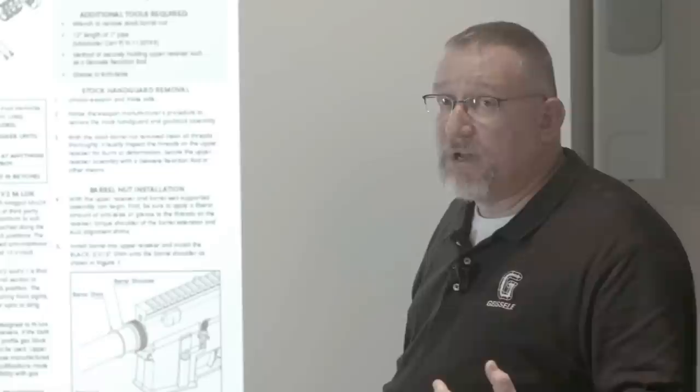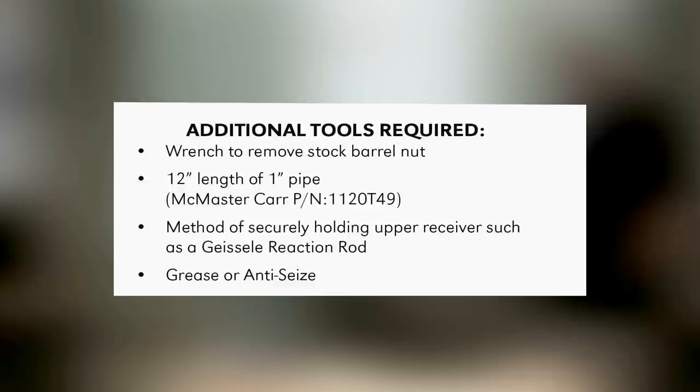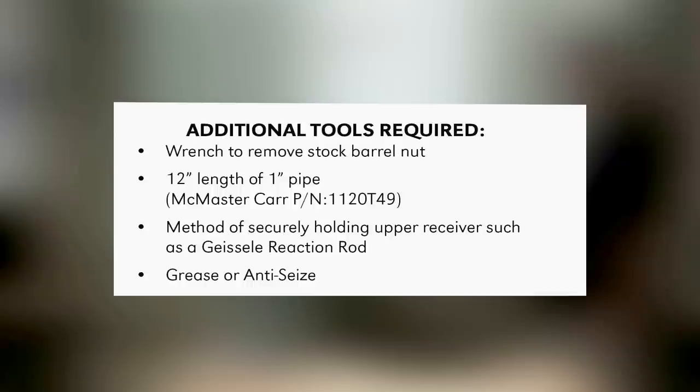Tools that you're going to need. You're going to need a way, if you're starting with an upper that's assembled, you're going to need a tool in order to remove the stock barrel nut. That's not included with this. You're going to need a 12 inch piece of one inch pipe. You get that at Home Depot or Lowe's. You can even order it online from McMaster Carr. Here it's got a part number for that guy.